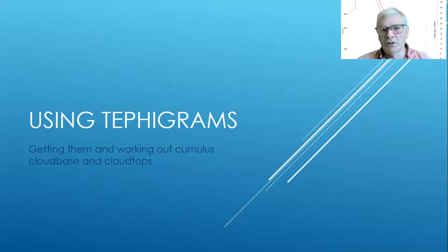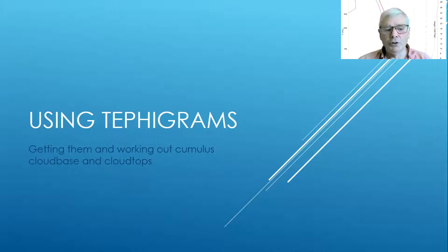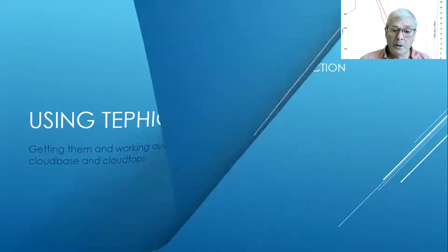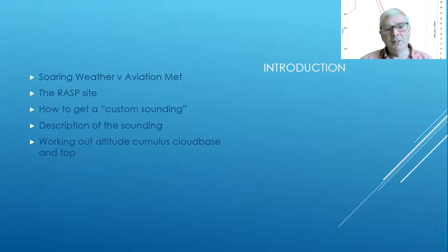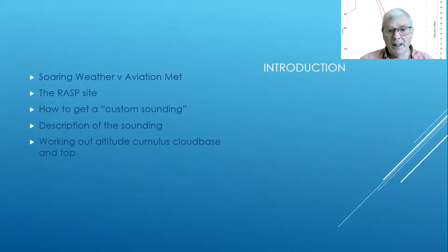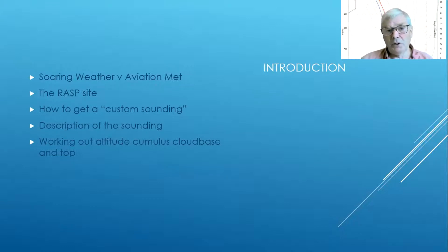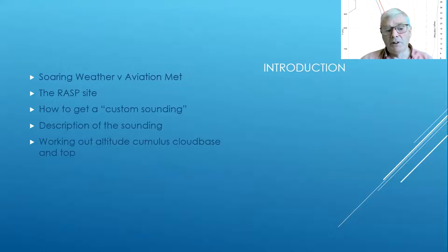So now what we're going to talk about is tephigrams — basically how to get them and how to work out what cumulus cloud bases and cloud tops are likely to be. We're going to cover a number of topics: very briefly, what's the difference between getting soaring weather and getting aviation weather for a pilot; the RASP site itself; how to get a custom sounding; and finally we'll work out the altitude of cumulus cloud bases and cloud tops.